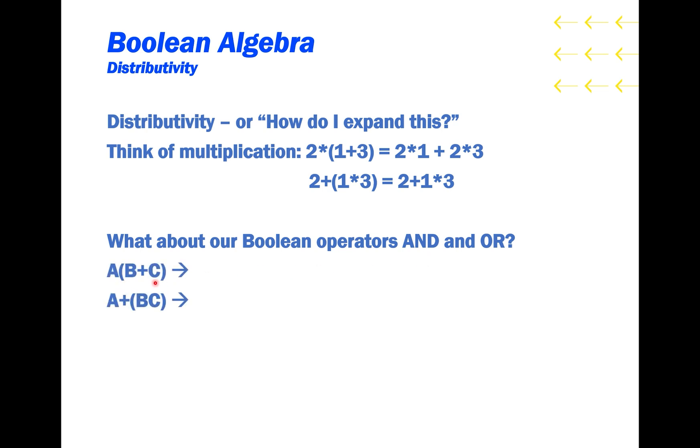This works very similarly for our AND or OR operators. A and B or C will get expanded to A and B OR A and C, while A OR B and C will not get expanded. So you can just remember how it works for multiplication, and apply it to our Boolean operators.